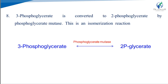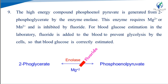Next, 3-phosphoglycerate is converted to 2-phosphoglycerate by the enzyme phosphoglycerate mutase — this is only an isomerization reaction. Then, the high-energy compound phosphoenolpyruvate is generated from 2-phosphoglycerate by the enzyme enolase.